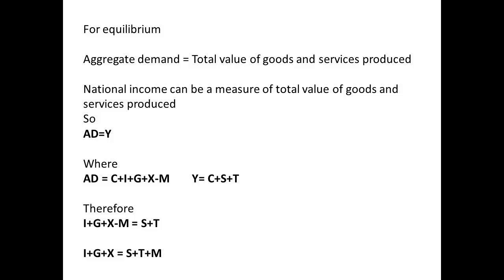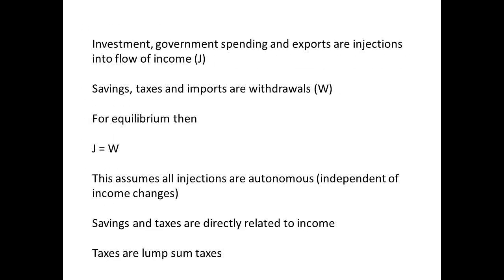We can remove the C for consumption and now say that investment plus government spending plus exports minus imports equals savings plus tax. Rearranging, we get: investment plus government spending plus exports equals savings plus tax plus imports. What we have done is separate the flows of income in terms of injections and withdrawals. Investment, government spending, and exports are injections; savings, taxes, and imports are withdrawals (W). So at equilibrium, injections equals withdrawals: J equals W.